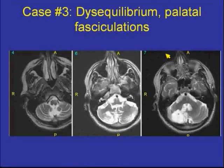In this case, this is an individual, an older gentleman, who had disequilibrium and palatal fasciculations. The soft palate is fluctuating. You are seeing serial T2-weighted scans from inferiorly to superiorly.